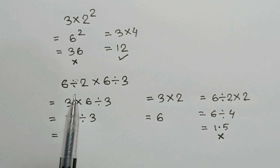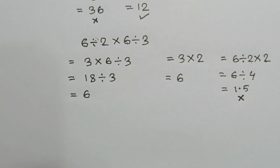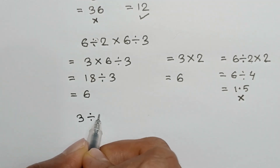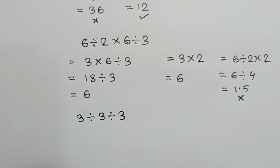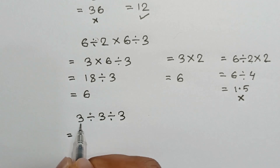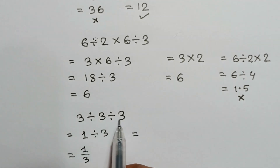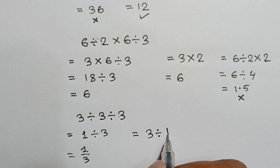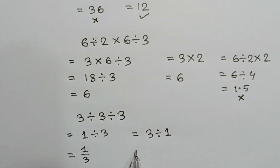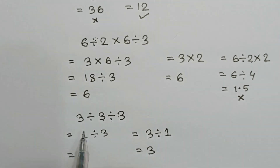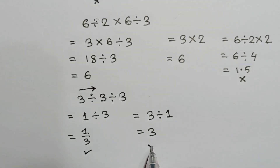But what happens if there are multiple divisions, such as 3 divided by 3 divided by 3? Which division works first? If we calculate the left division first, we get 3 divided by 3 is 1, then 1 divided by 3 is one-third. If we calculate the right division first, we get 3 divided by 1 is 3. When multiple divisions appear, they work from left to right. So one-third is the right answer and 3 is wrong.